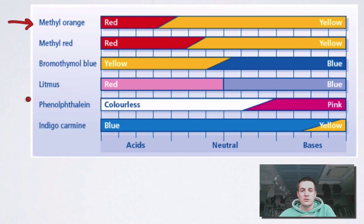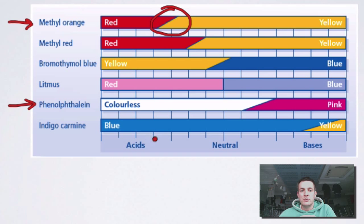This chart is showing us the end points of indicators. We've just talked about equivalence points in titrations — they're volumes at which we get the stoichiometric ratio of reactants in our flask. End points aren't volumes — end points are pHs. We can see the end point of methyl orange: it is changing colour between pH 3 and pH 5. So the end point of methyl orange is between 3 and 5, corresponding to a change from red in the acidic range to yellow in the basic range.